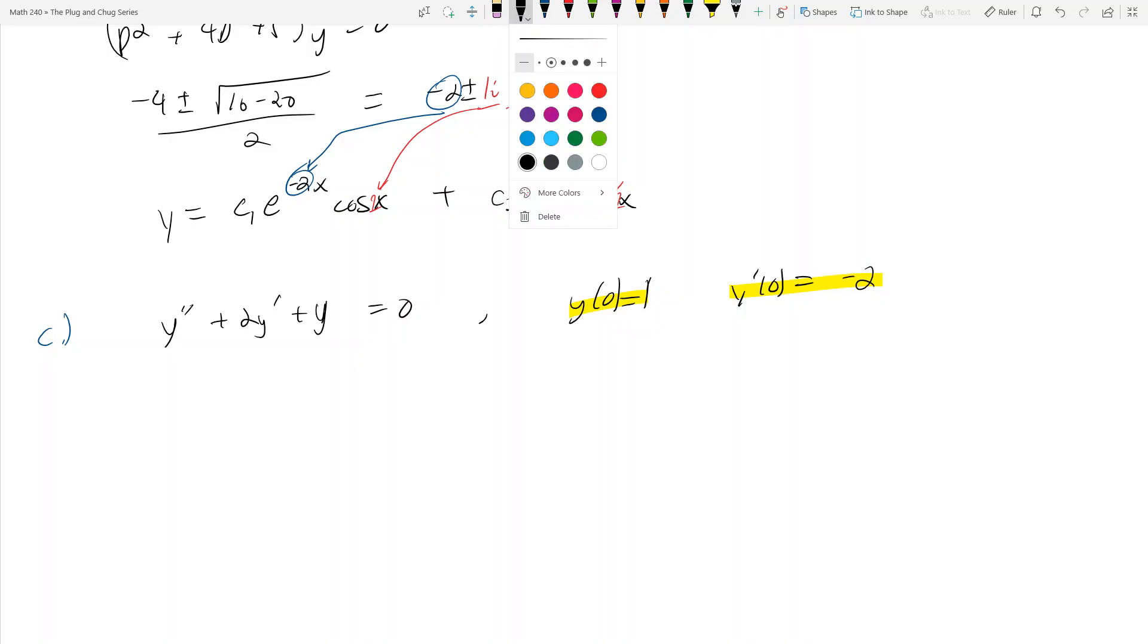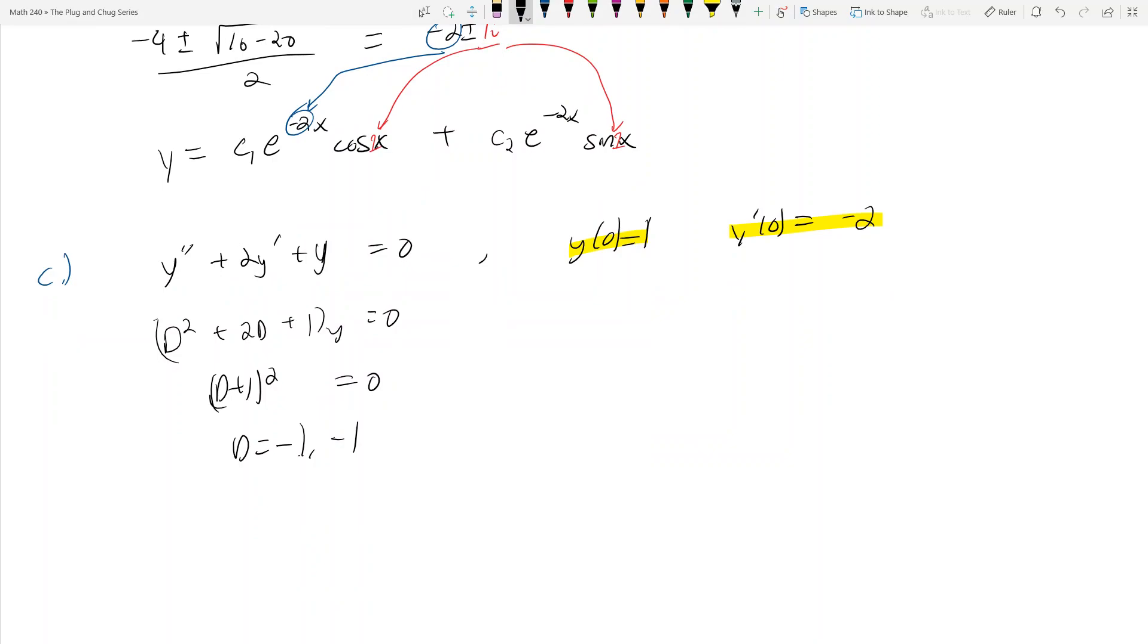The way to approach them is this. You do your whole thing: D squared plus 2D plus 1 applied to y equals 0. This is D plus 1 squared equals 0, so D equals negative 1, negative 1. You get y equals C1 e to the negative x plus C2 x e to the negative x.